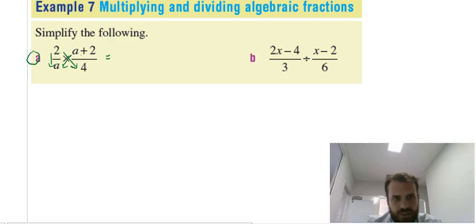So when I look at these, I can't cancel anything with 2 and A, and I can't cancel anything with A plus 2 over 4, but I can cancel across there. So that's going to leave me with the 2 cancels out, so that just leaves a 1 up the top of that one, times A plus 2 and a 2 down the bottom of that one.